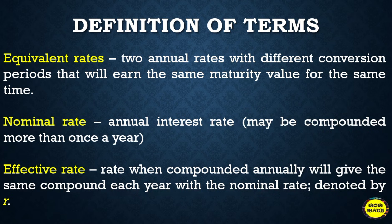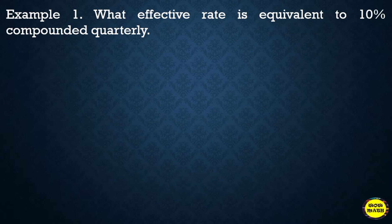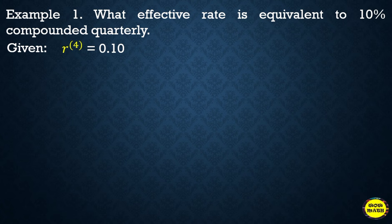The effective rate is denoted by r. Example number one: what effective rate is equivalent to 10% compounded quarterly? Recall from the definition that the effective rate is the rate when compounded annually. The given rate r raised to 4 is used to indicate this is the compound rate for compounded quarterly.